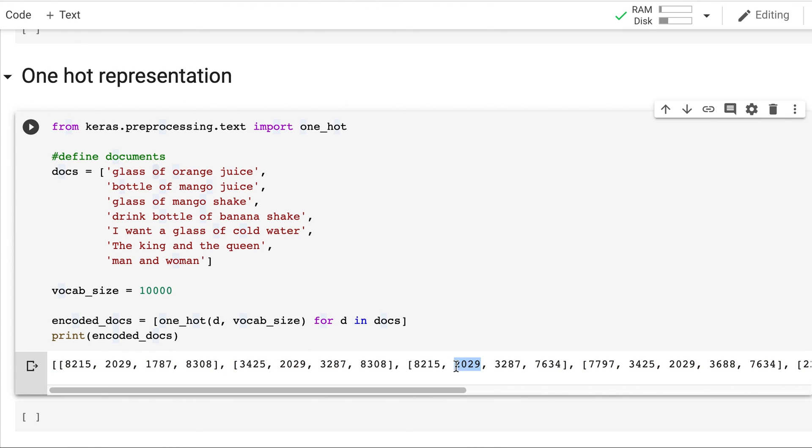Similarly, you can see the second index for all of these first three documents is 2029, which denotes off. So this way we can calculate the one hot representation of words in Keras.